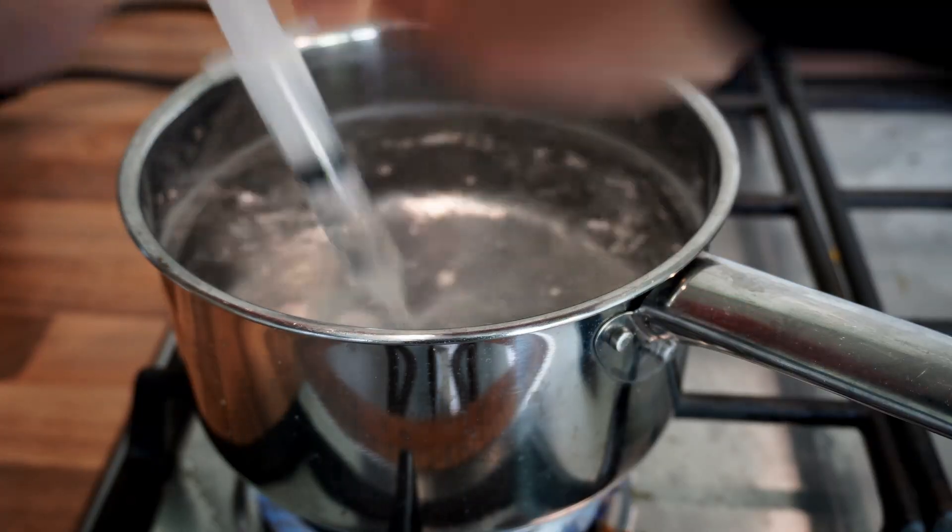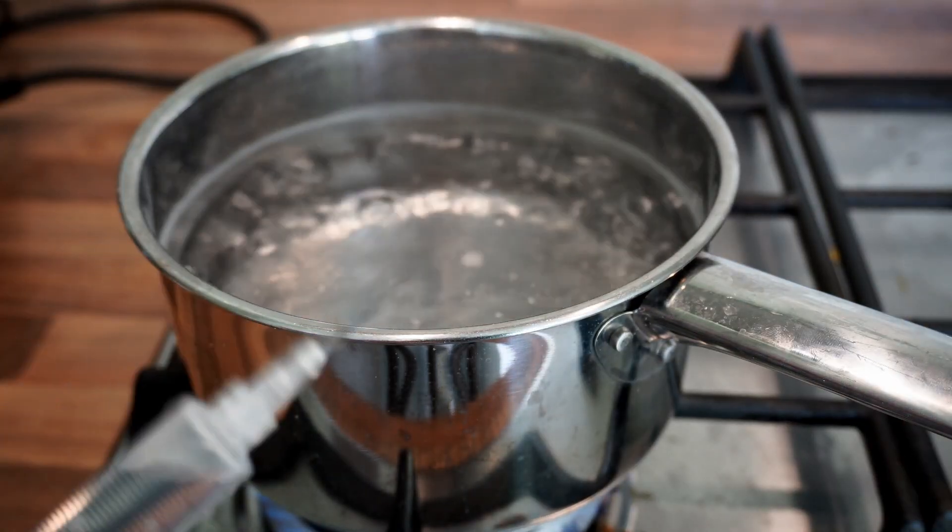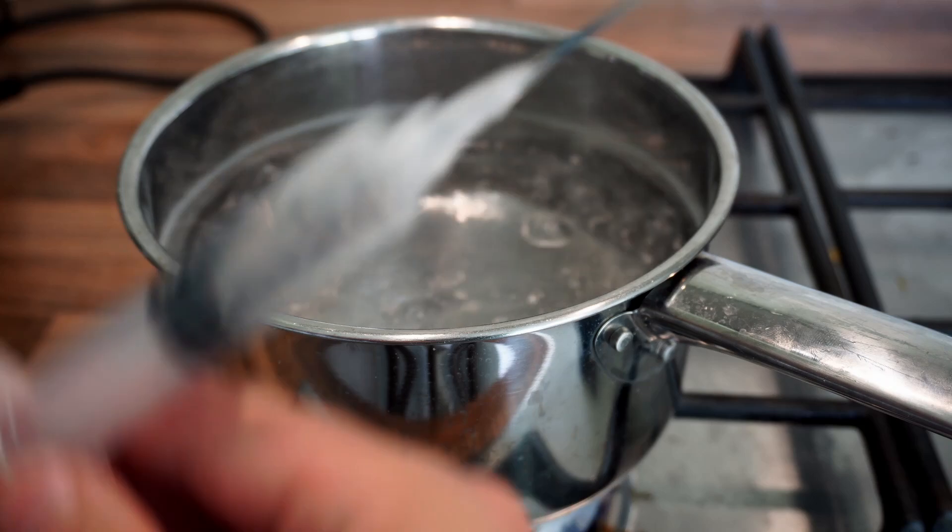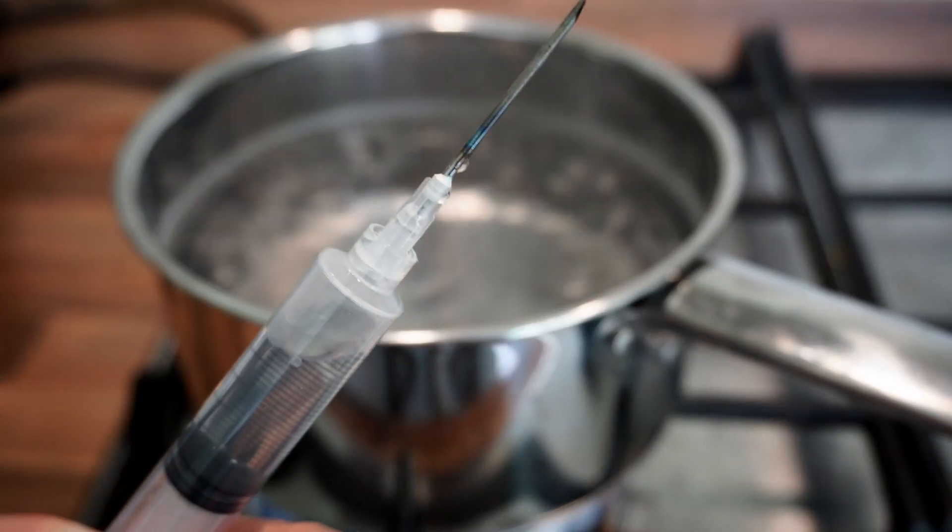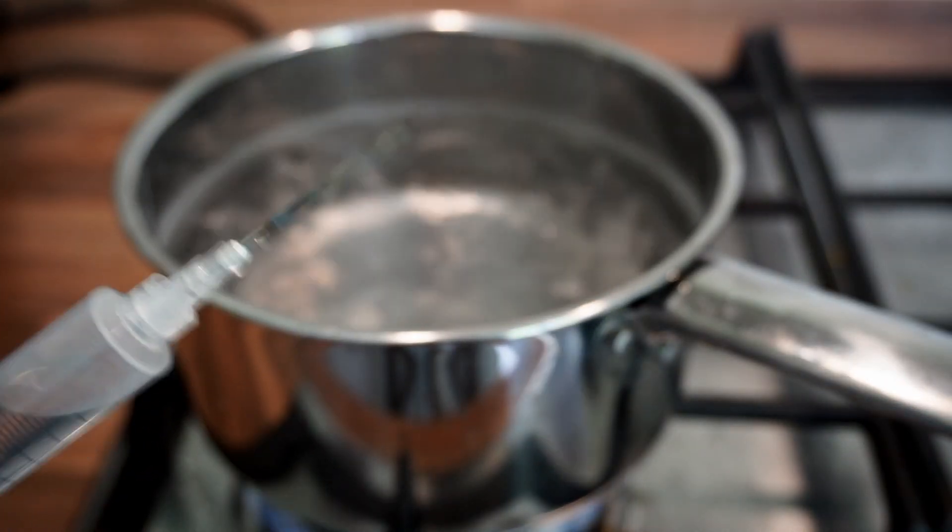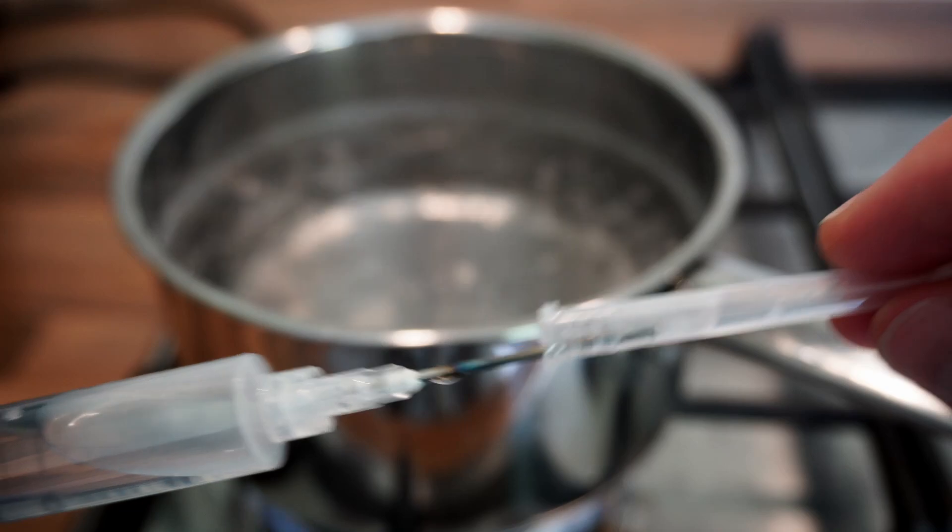Next I'm going to flush the syringe three to four times with the boiling water just to clean out the inside. Draw up a small amount of air and then put the cap back on the syringe.